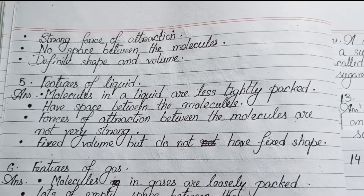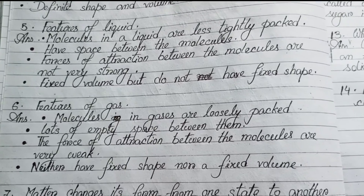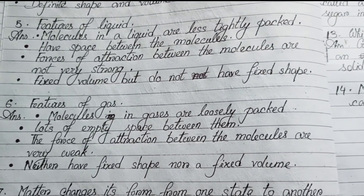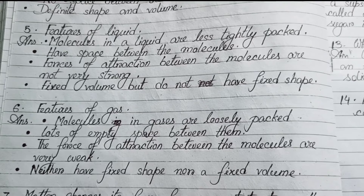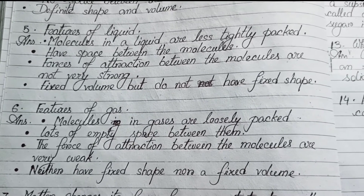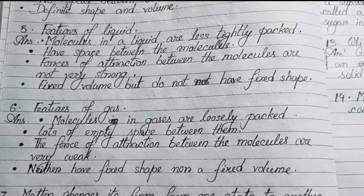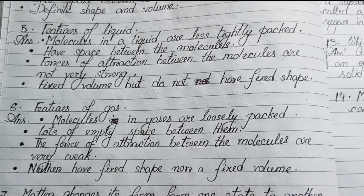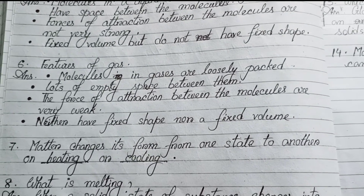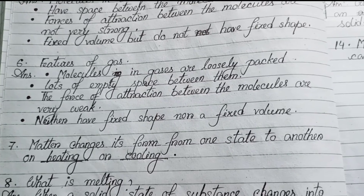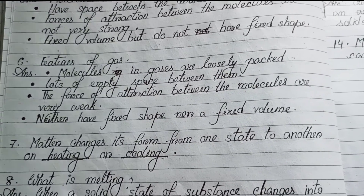Number 6: Features of gas — molecules in gases are loosely packed with lots of empty space between them. The force of attraction between the molecules is very weak. Gases neither have a fixed shape nor a fixed volume. Number 7: Fill in the blank — matter changes its form from one state to another on heating or cooling.